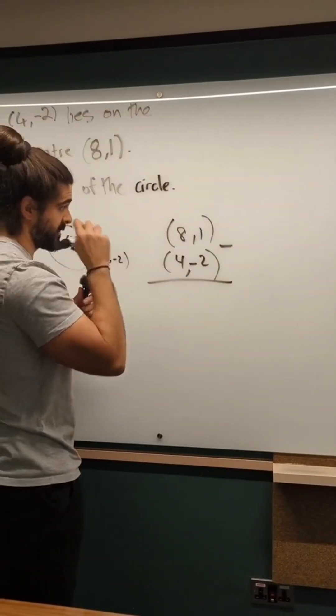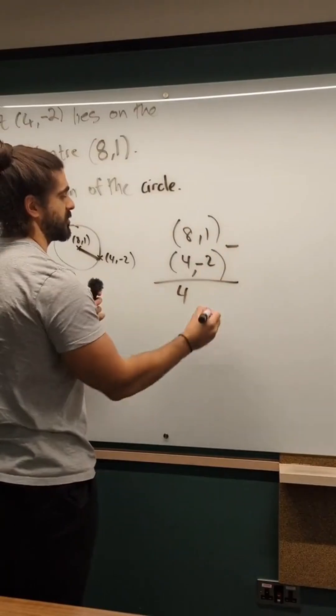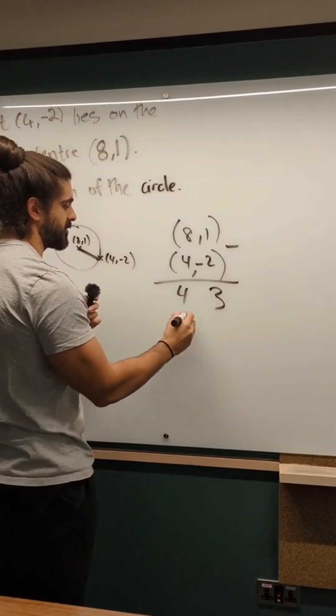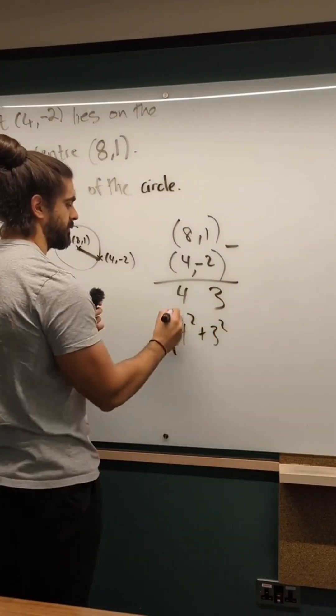8 minus 4 is 4. 1 minus minus 2 is 3. Then we do Pythagoras, 5.